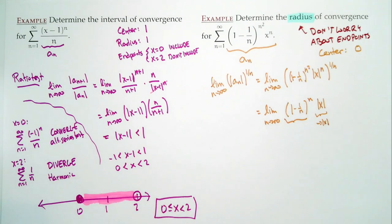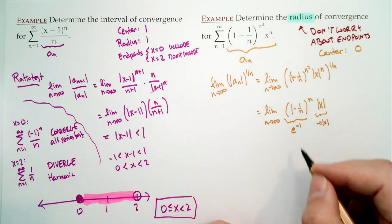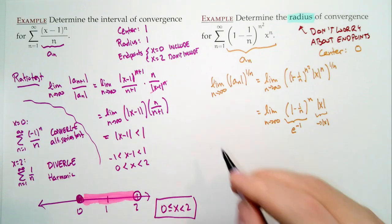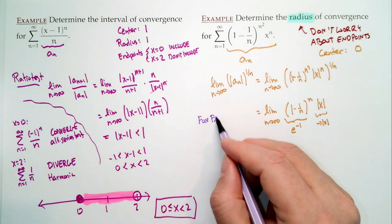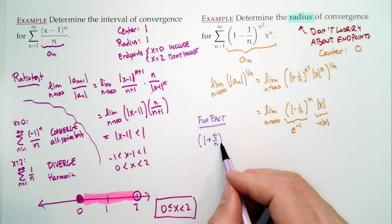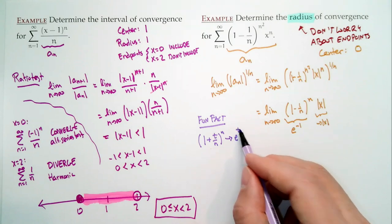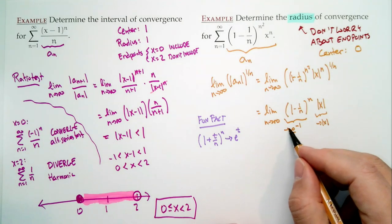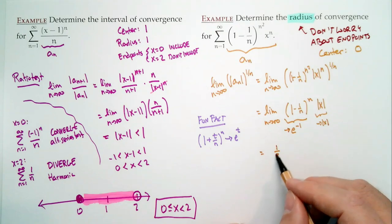So this becomes the limit as n goes to infinity of (1 minus 1/n)^{n² · (1/n)} times |x|^{n · (1/n)}. That's (1 minus 1/n) to the n, times |x|. Now here's a fun fact we've talked about before: (1 + t/n)^n goes to e^t. So (1 minus 1/n)^n — think of this as (1 + (negative 1)/n)^n — converges to e^{negative 1}. So our limit here is (1/e) times |x|. For convergence we need this less than 1, which means |x| < e. That's our absolute value of x minus a less than R form. So our radius of convergence is e. That's not at all obvious — good.